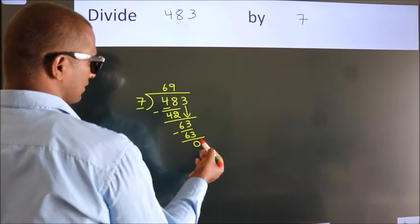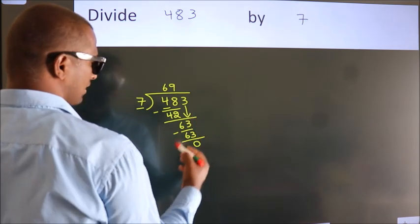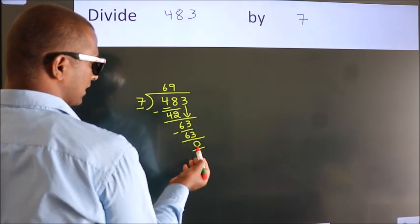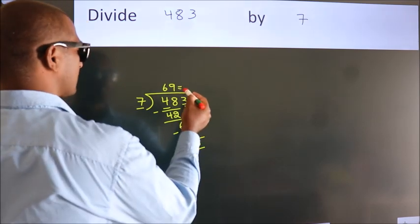After this, there are no more numbers to bring down, and we got remainder 0. So this is our quotient.